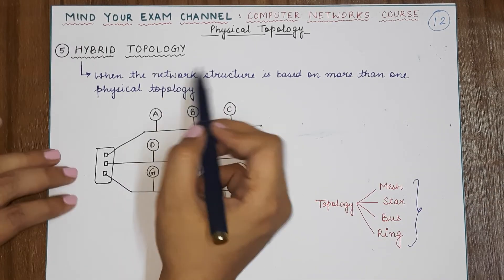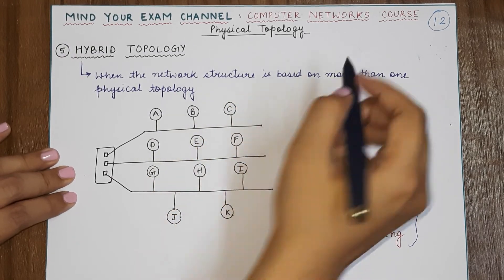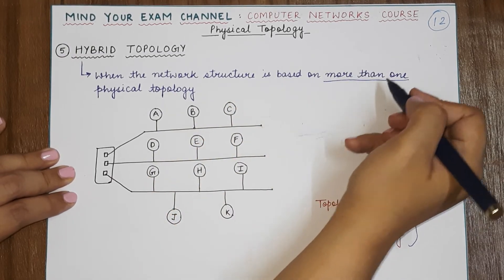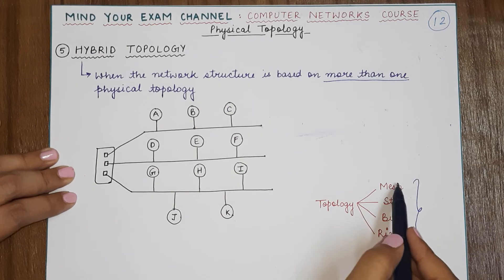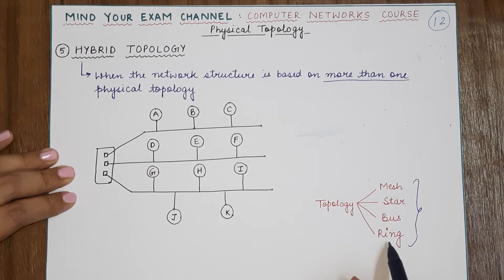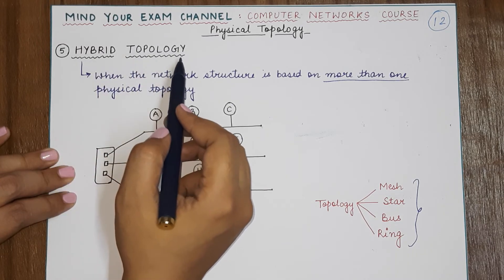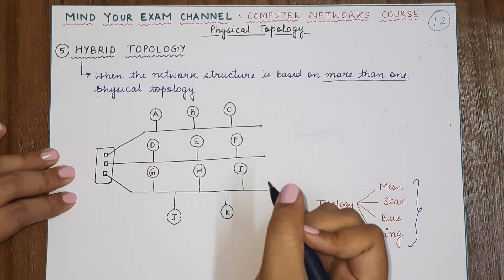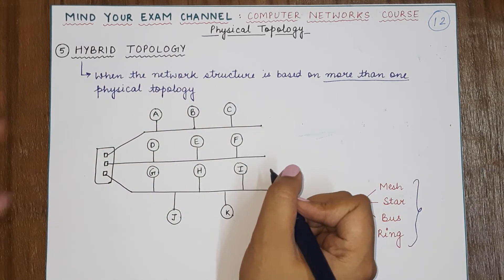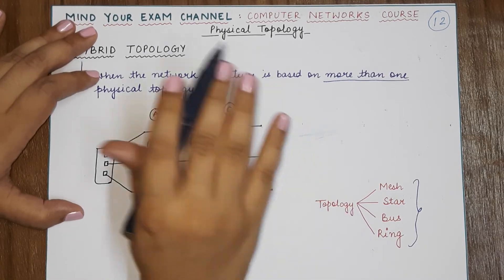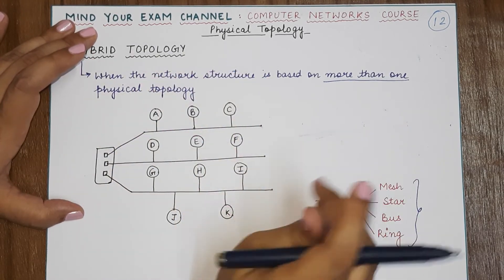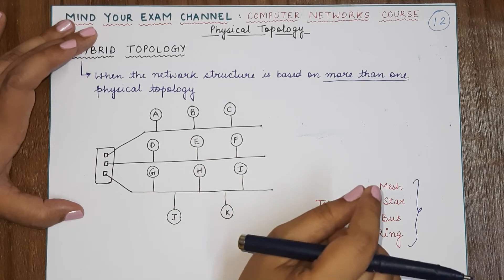So basically, when the network structure is based on more than one physical topology, that combination is known as the hybrid topology. Hybrid topologies are basically developed to combine the advantages and to eliminate the disadvantages of a single topology.